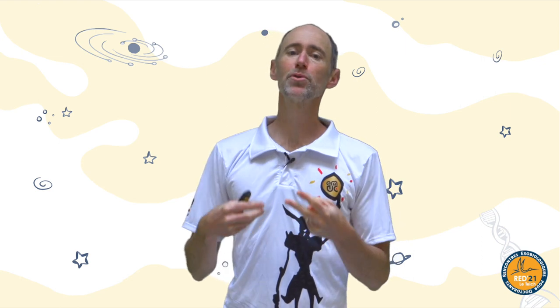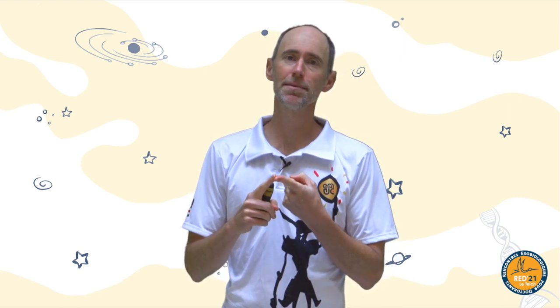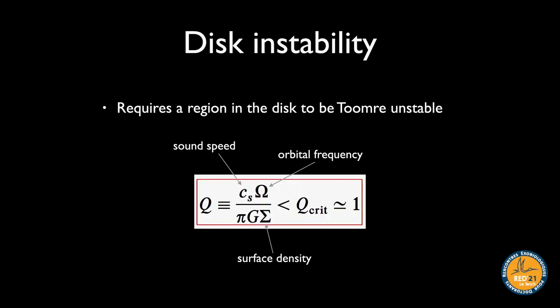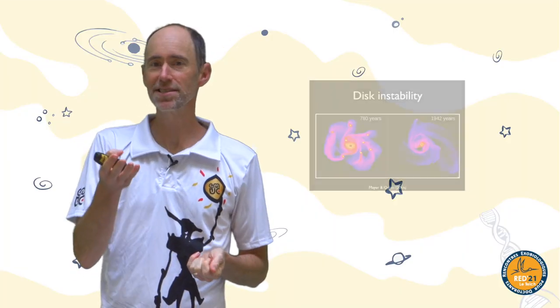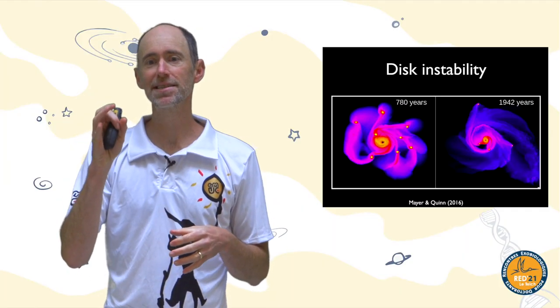There are two main formation models for giant planets. First is the disk instability idea: some region in the disk is dynamically unstable and wants to clump gravitationally, quantified using the Toomre Q criterion. Simulations of gravitationally unstable discs make beautiful pictures — large-scale spiral structures forming giant planet clumps. The question is whether this really happens in real life.